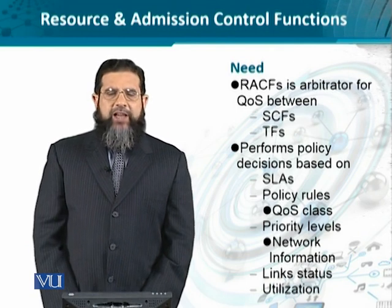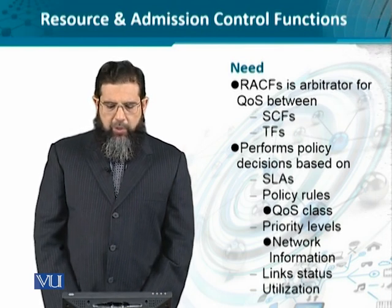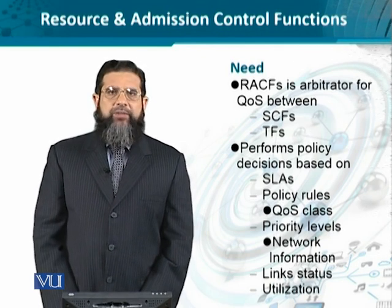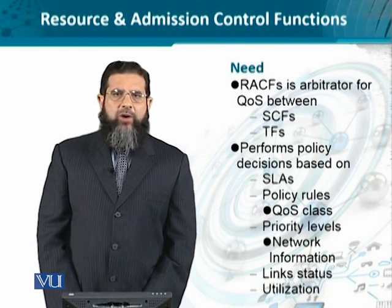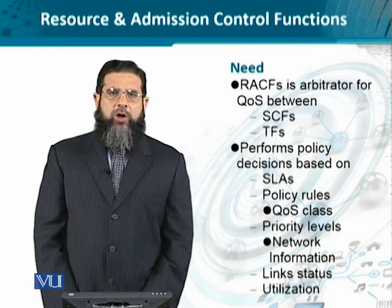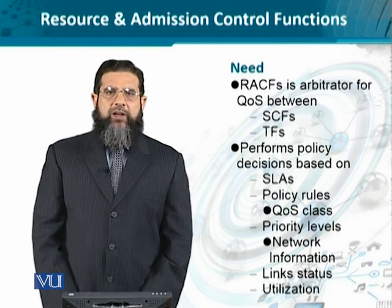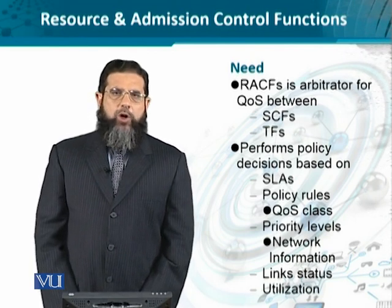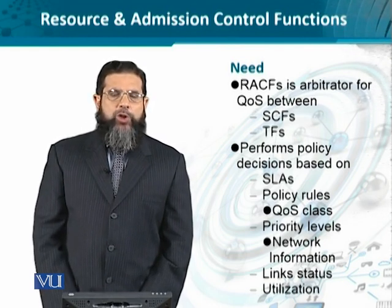The RSCF gets invoked — it gets activated — to implement policy decisions on the basis of certain criteria. These criteria are related to handling a user request to get a certain service, based on factors such as the service level agreement, the rules defined by the network for policy, and what types of quality of service classes are available and whether the network is able to implement QoS differentiation.